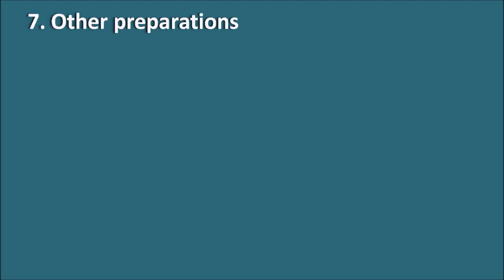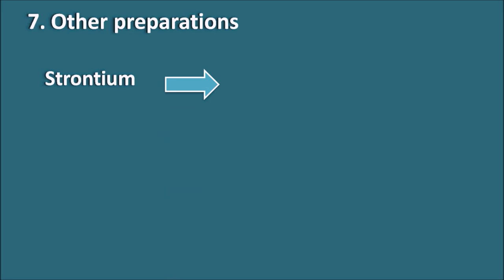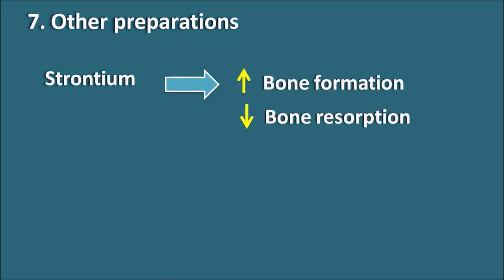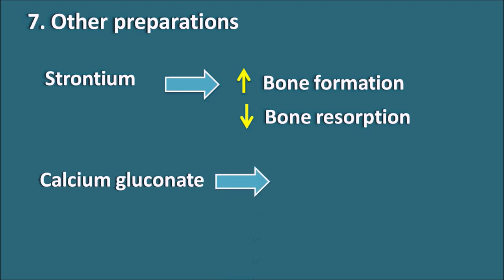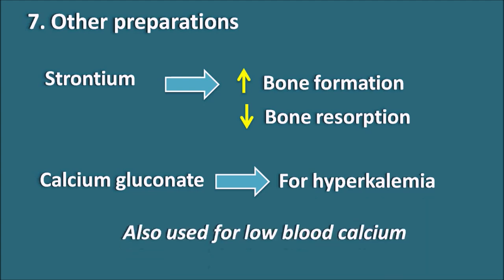Other preparations used in osteoporosis include strontium, which has a dual effect — it increases bone formation as well as decreases bone resorption. Calcium gluconate, although primarily indicated for hyperkalemia, acts as a source of calcium and can be used as a calcium supplement in conditions with low blood calcium, including osteoporosis. The main target in osteoporosis is to increase osteoblast formation and decrease osteoclast activity; many drugs show anti-resorptive activity while some promote osteoblast activity to increase bone formation.